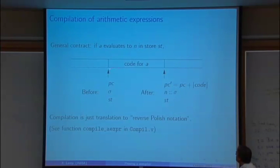So the general contract for the code we want to generate for A is that, well, so it should be a list of instructions so that if we start the machine at the beginning of this list of instructions with some stack and some state, then in a finite number of steps, we should reach this instruction, which is one after the code for A, with a stack that is unchanged, except that now the value of A has been pushed on top and the store is unchanged.